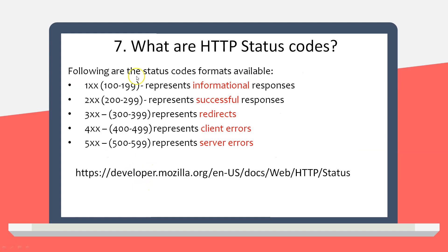Next question: what are the HTTP status codes? An easy way to memorize them is by their series. The 100 series (100–199) represents informational responses. The 200 series (200–299) represents successful responses, like 200, 201, and 203. The 300 series (300–399) represents redirects or forwards. The 400 series (400–499) represents client errors — a 400-level message means there is a problem with the REST client. The 500 series indicates a problem with the server.